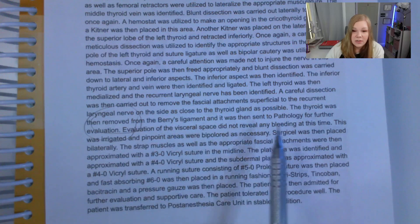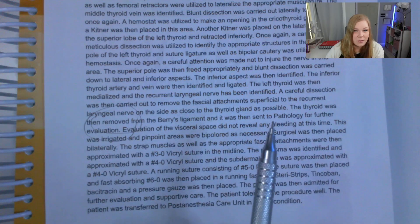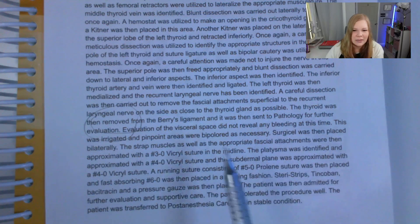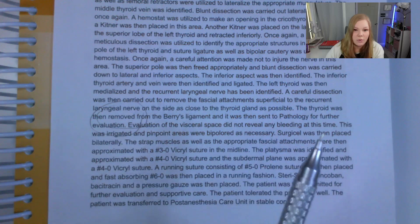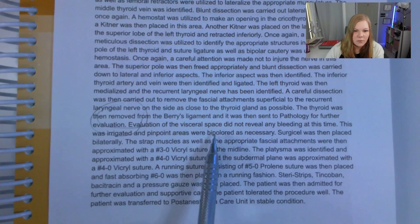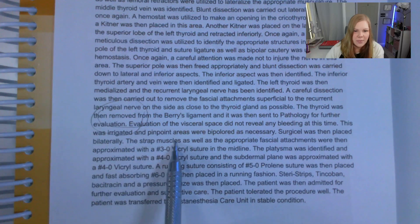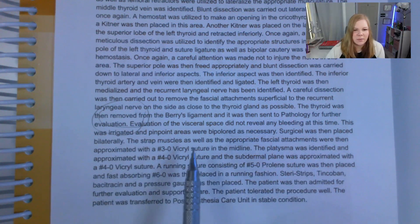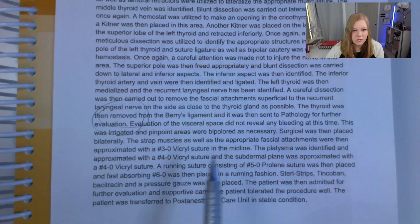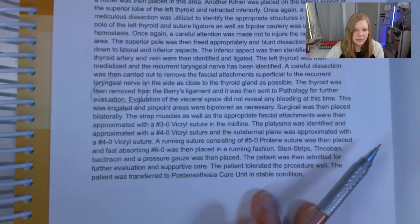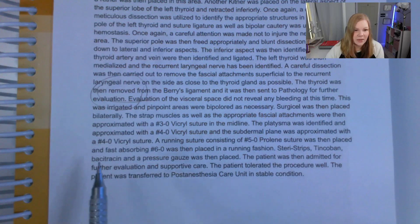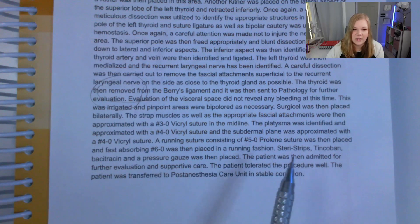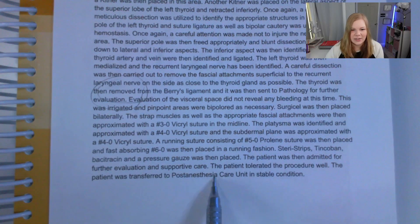Evaluation of the visceral space did not reveal any bleeding. The thyroid was removed, so this part is suturing the patient and cleaning up. The area was irrigated, pinpoint areas were bipolared as necessary, and Surgicel was placed bilaterally. Strap muscles and appropriate fascial attachments were approximated with sutures. The platysma was approximated with sutures, and the subdermal plane was approximated with sutures. Running 5-0 Prolene suture was placed, along with fast-absorbing 6-0 suture. Steri-Strips, Tincoban, Bacitracin, and pressure gauze were placed. Patient was admitted for further evaluation and supportive care, and taken to PACU in stable condition.